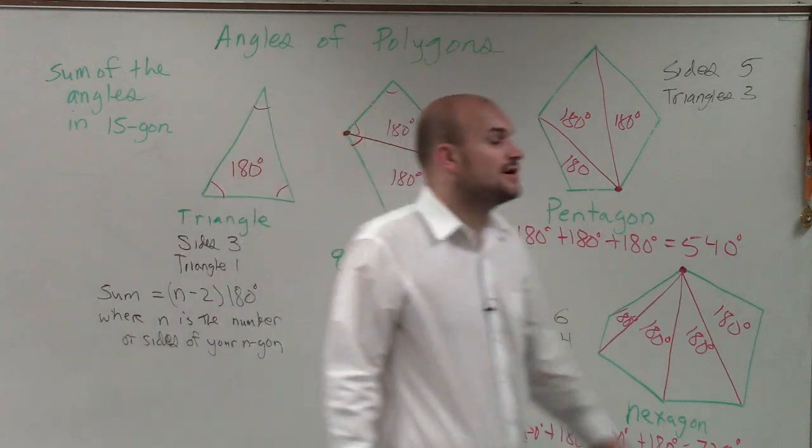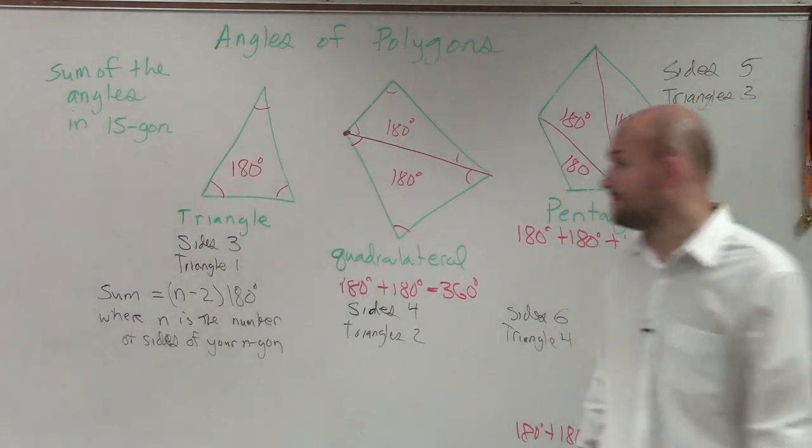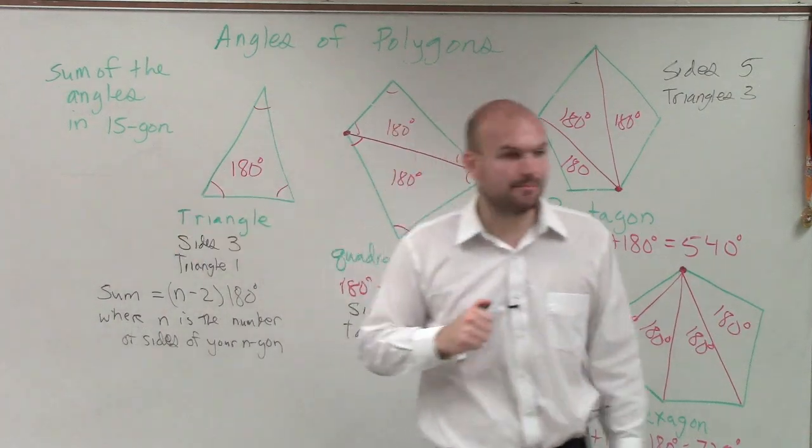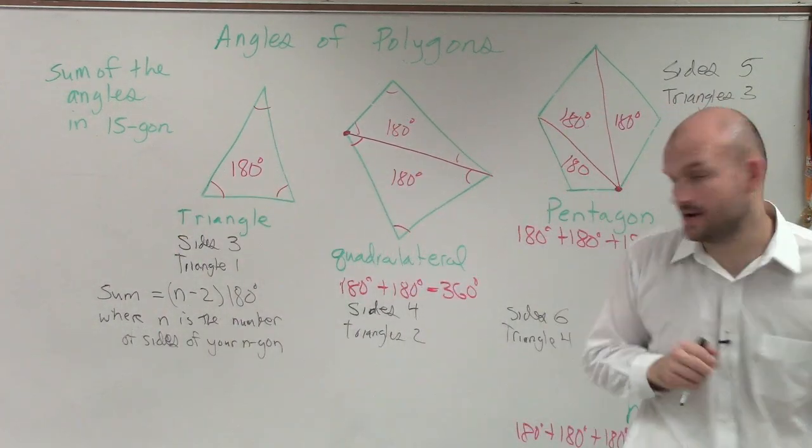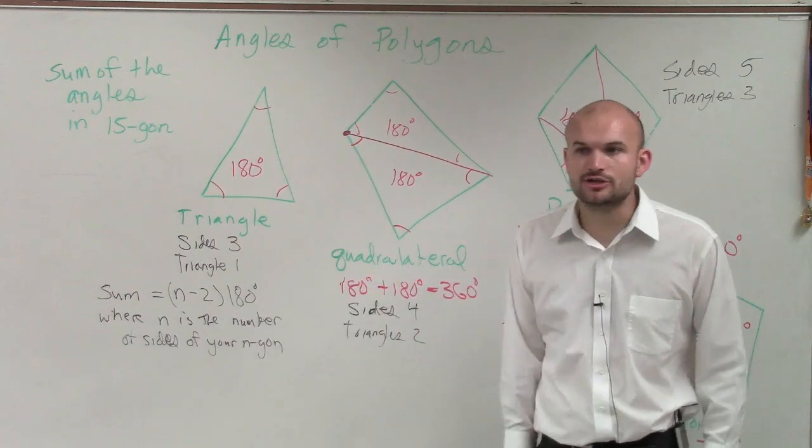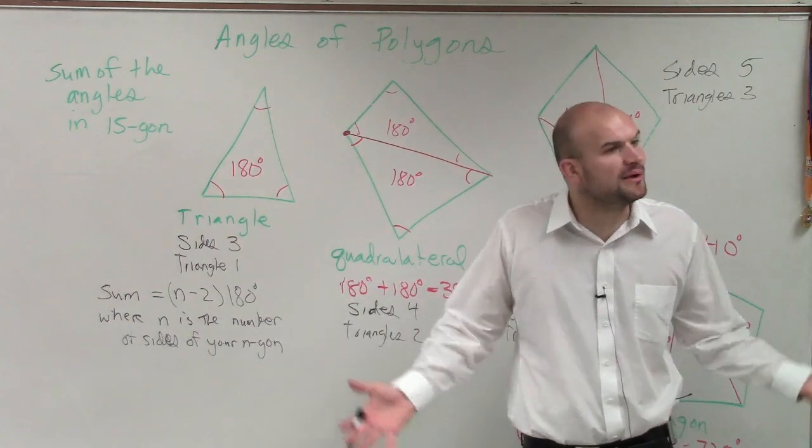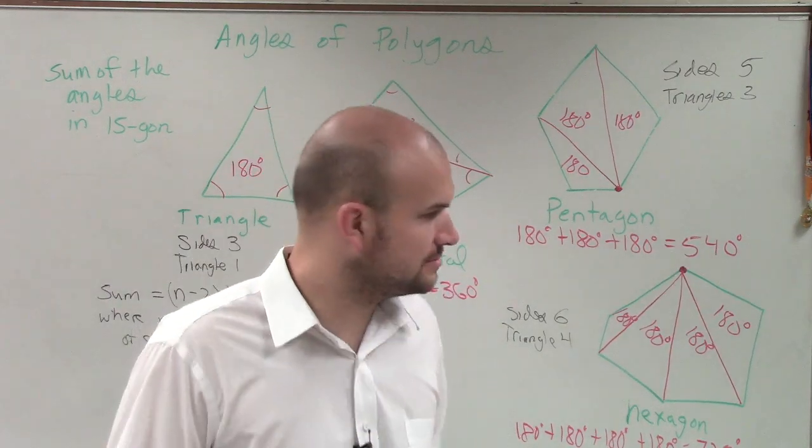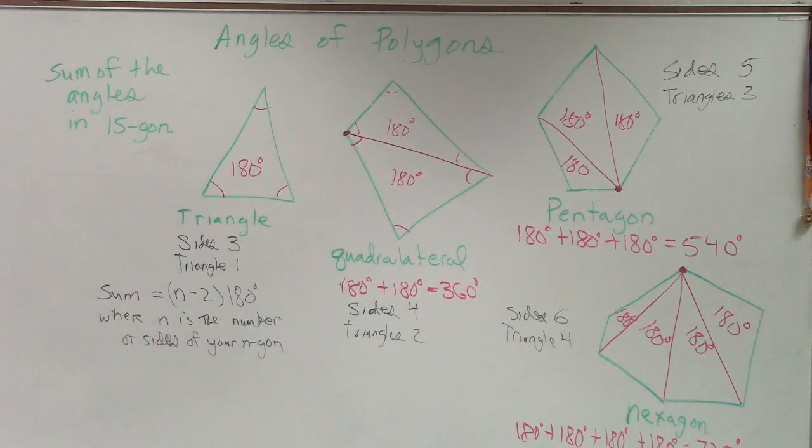So, if I say you have a 15-gon, that means you need to do 15 minus 2, and then multiply that by 180. All right, so now we can be able to determine what the sum of all the angles inside of a polygon is, or inside of a 15-gon.